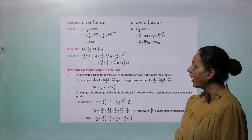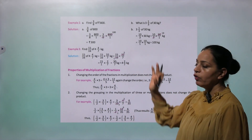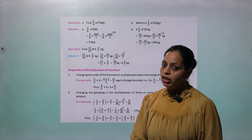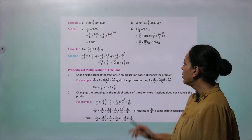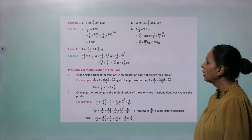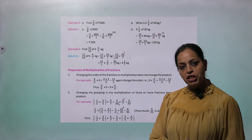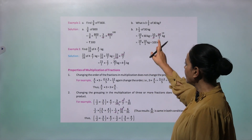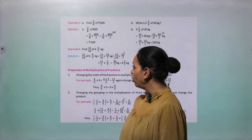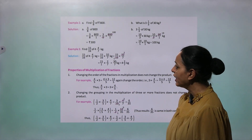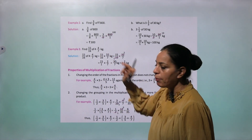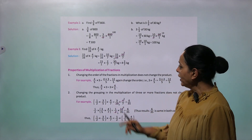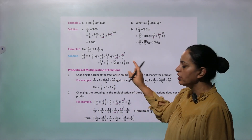Example 2a: Find 3 by 8 of rupees 800. 'Of' means multiply. So 3 by 8 multiplied by 800 — cancel 8 into 800 to get 100. So 3 into 100 equals rupees 300. Example 2b: Find 3 whole 1 by 3 of 30 kg. Change to improper fraction: 10 by 3 into 30. Cancel 3 and 30 — you get 10 into 10, which is 100 kg. Example 3: Find 15 by 16 of 4 whole 4 by 7 kg. Change mixed fraction to improper: 32 by 7. Cancel 16 and 32 — you get 30 by 7. Convert to mixed fraction: 4 whole 2 by 7 kg.